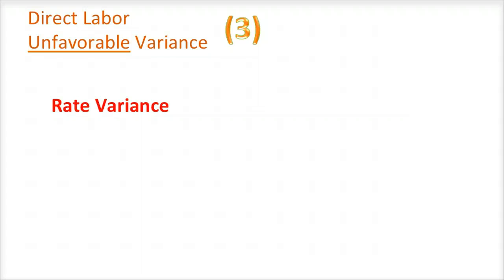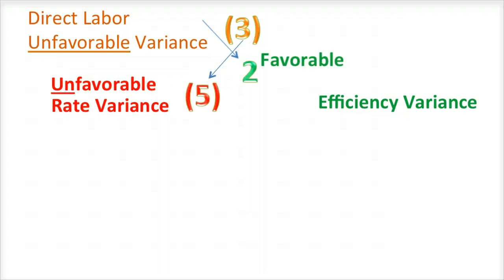or by the workers using too much time to produce each unit, efficiency variance, or a combination of unfavorable and favorable variances that simply net to $3 as in the example provided.